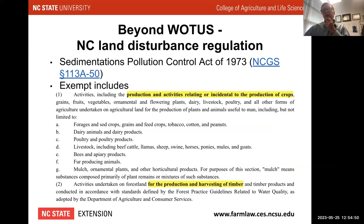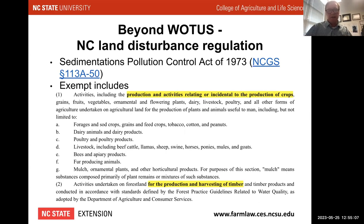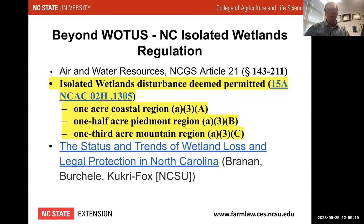Just know that in general, where WOTUS ends, state regulation begins — if the state has exercised its police power to regulate. In North Carolina, one of the things we have are isolated wetlands called pocosins. They're non-alluvial, not connected to a flowing water source, not connected to a WOTUS with a direct hydrologic connection. State law does protect those. Some features not considered WOTUS might otherwise be protected by state law, and then you're going through your state regulatory agency to make a determination on what you can and can't do.